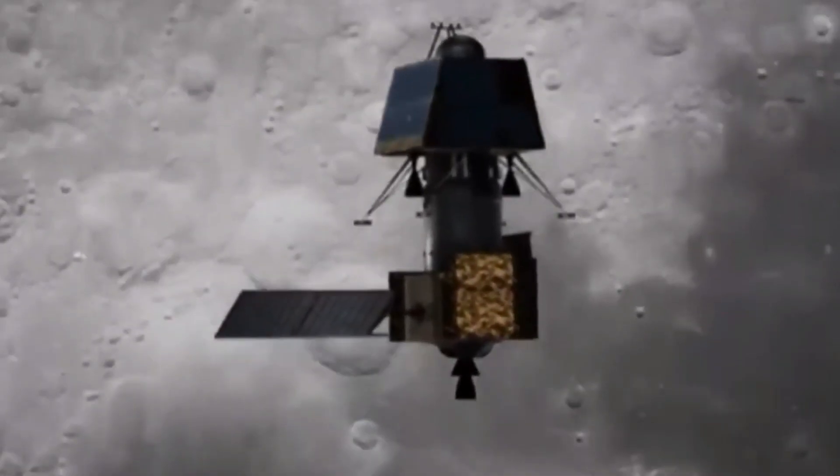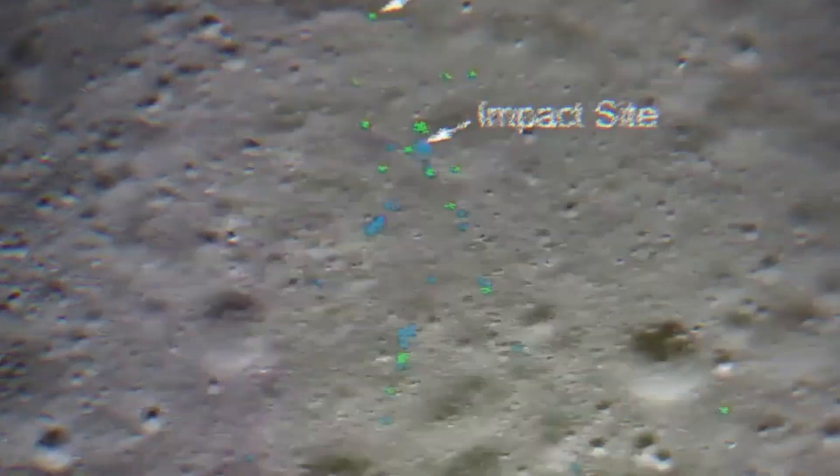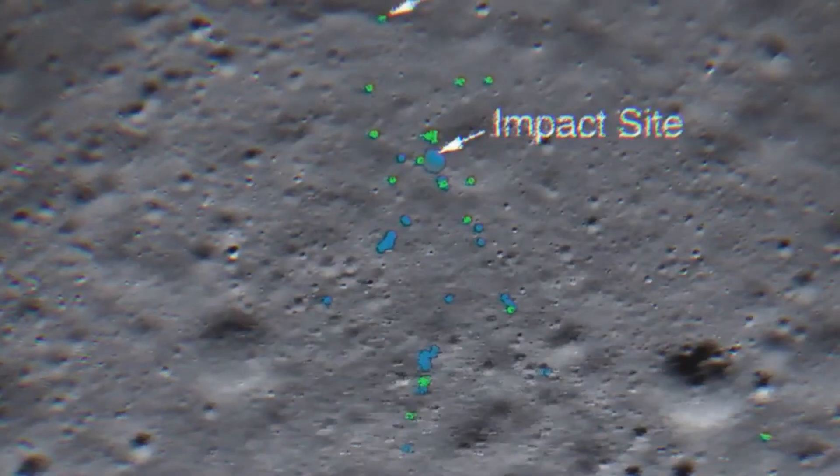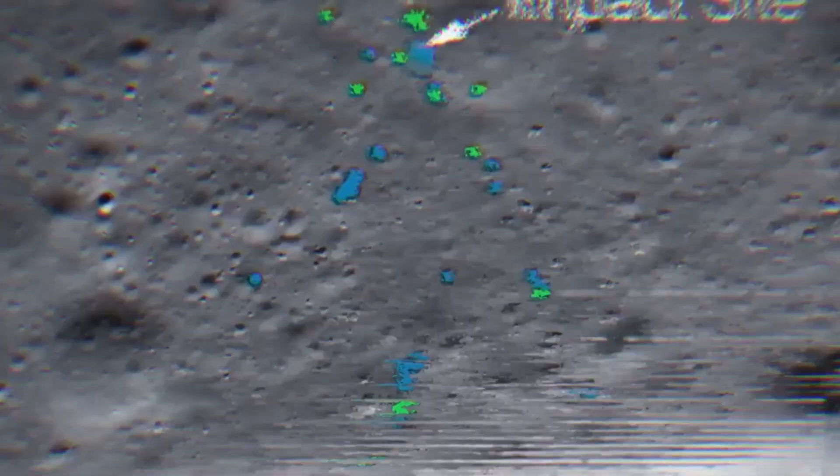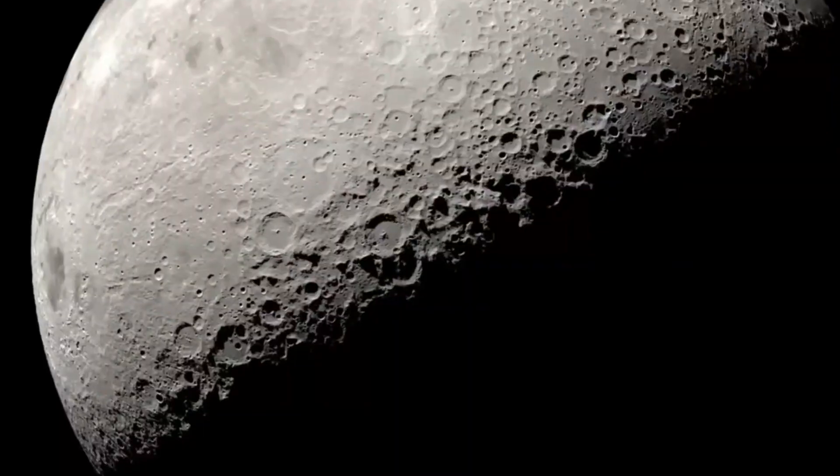However, the lander and rover faced a setback when they lost contact with mission control during their descent to the lunar surface. The lander was supposed to land near the south pole, but it crashed due to a technical glitch. Despite this failure, India did not give up on its lunar ambitions.